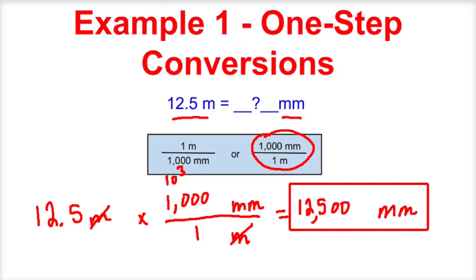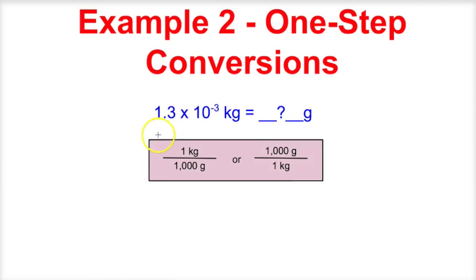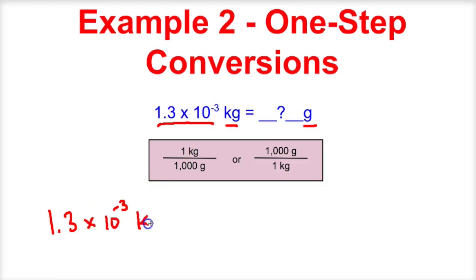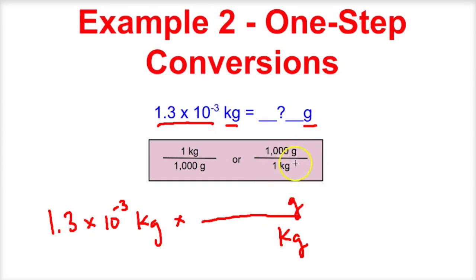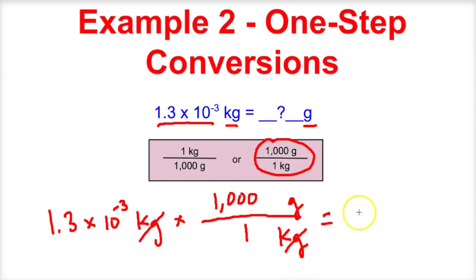Let's take a look at another problem. We have 1.3 times 10 to the negative third kilograms, and we want to figure out how many grams this is. Don't let the scientific notation fool you — we learned all about scientific notation in an earlier video. We have 1.3 times 10 to the negative third kilograms, and we want to cancel out kilograms at the bottom of our equivalent statement and convert to grams at the top. We know there are 1,000 grams in one kilogram. This unit will now cancel, and what we end up with is 1.3 grams as the final answer.